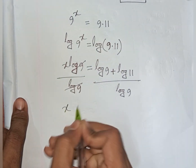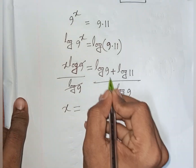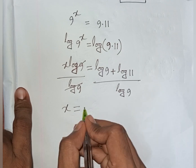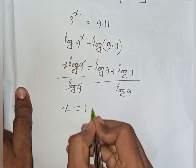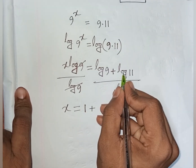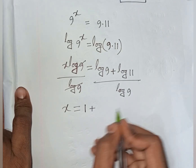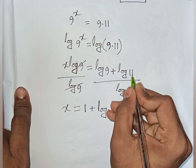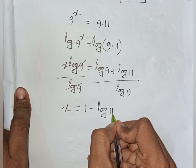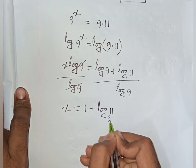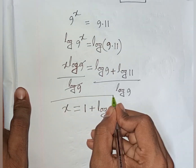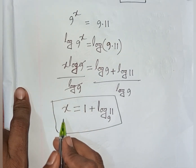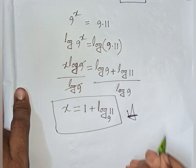So x = (log 9 + log 11) / log 9 = log 9 / log 9 + log 11 / log 9 = 1 + log₉(11). This is the value of x, and this is our final answer.